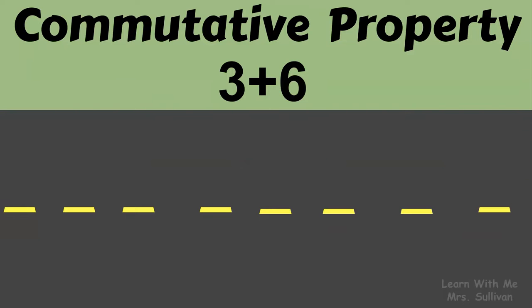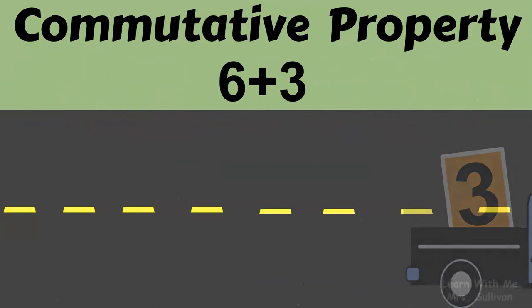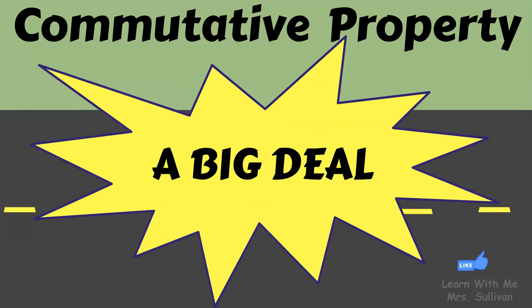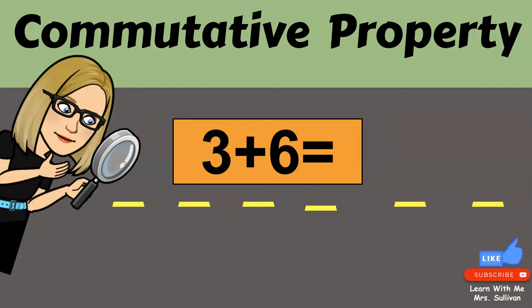Because of the commutative property, 3 plus 6 can be thought of as 6 plus 3. Why is this a big deal? Well, let's take a closer look to see why this makes a difference.